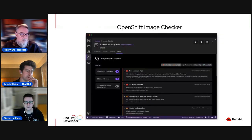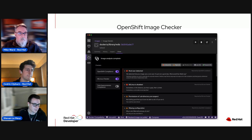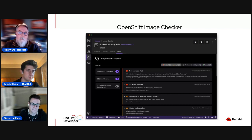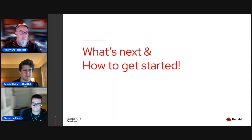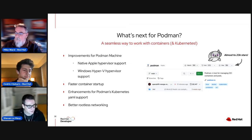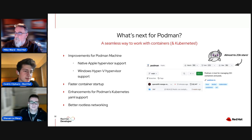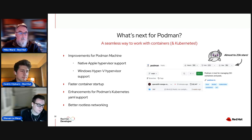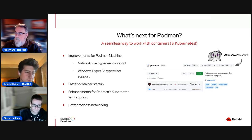There's also support for Dev Spaces, and now we have the OpenShift image checker that allows you to check the compliance of your image against its ability to run on OpenShift. What's next and how to get started: for Podman, go to the repository at github.com/containers/podman. We're working on improvements for the Podman machine to support native hypervisors from Apple and Windows, faster container startup for edge devices, and improving Kubernetes YAML support.